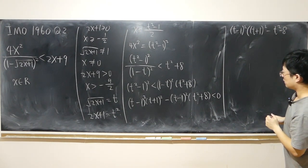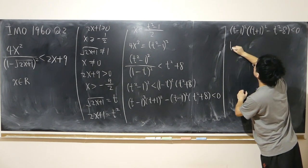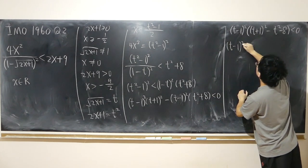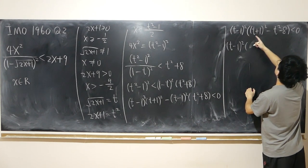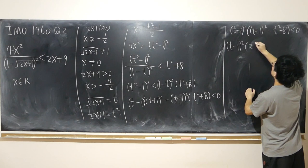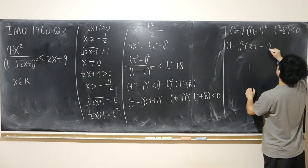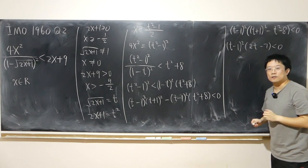Minus t squared minus 8, this time. So t minus 1 quantity squared, t squared minus t squared gone. 2t. So here I have 2t plus 1 minus 8, so minus 7. After I expand and simplify everything.